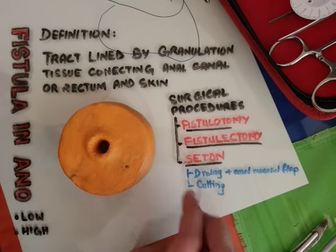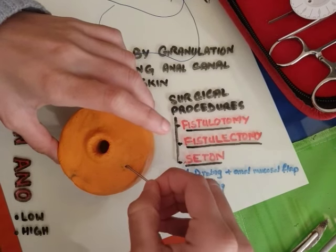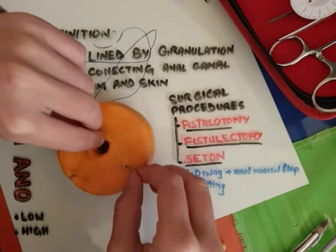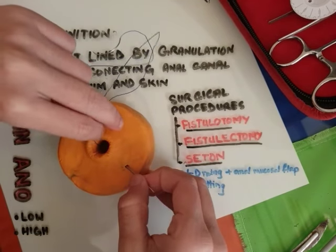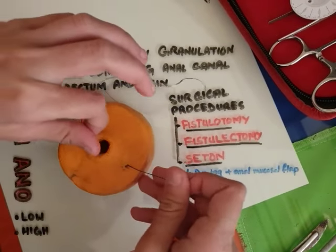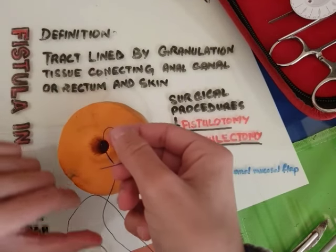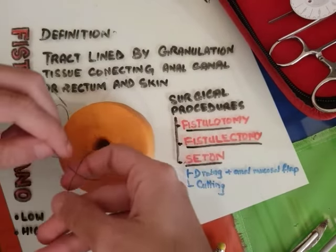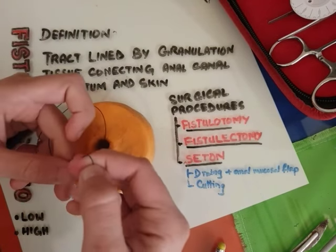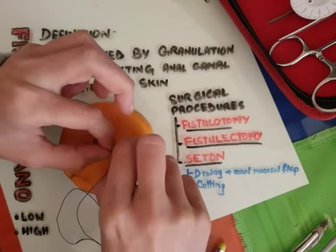Now I am going to demonstrate the seton. Seton is basically of two types: draining seton and cutting seton. I pass a probe with a hole through the fistula and then pass the thread or seton through the hole and pull it out. My procedure is of course not exact because I don't have the exact tools, but it is similar to what is actually done. I tie it — draining seton is kept loose, tied loosely. Its advantage is that the person can move it to and fro and drain the fistula.